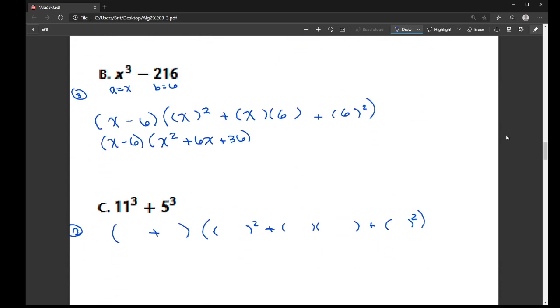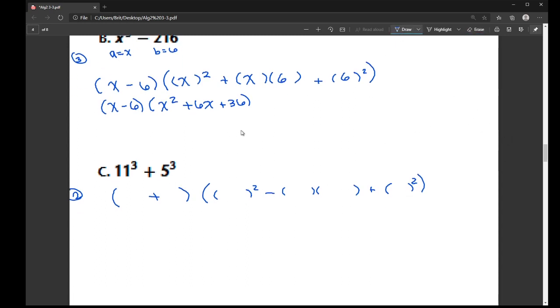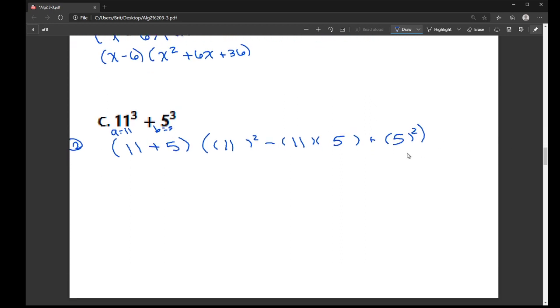There we go. So now where my a's are, I'm going to plug in an 11. So I have an 11 here, here, and here. And where my b's are, I plug in a 5. Now, is it probably faster to just cube those and add them? Of course. But this is just getting you some number sense.